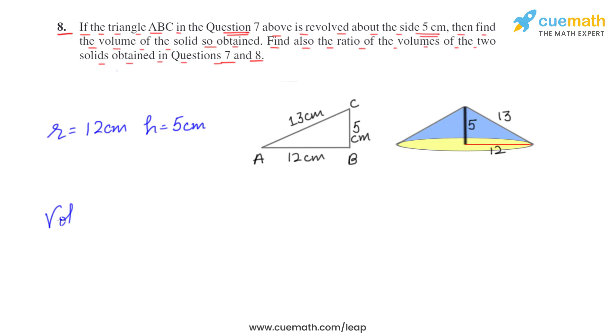Now we have to find the volume. So volume is 1/3 πr²h. Let's substitute the values: 1/3 × π × radius is 12 this time, so 12 squared × 5. This comes out to be 240π cubic centimeters.